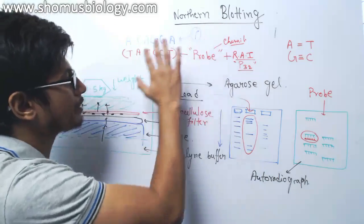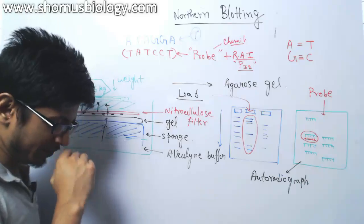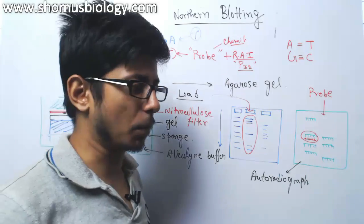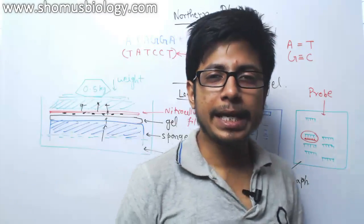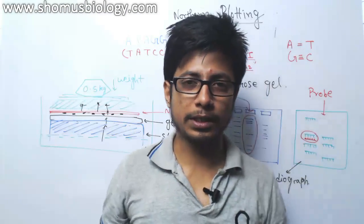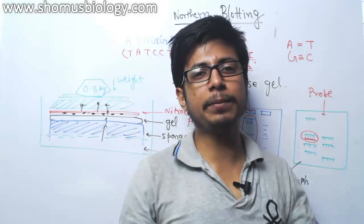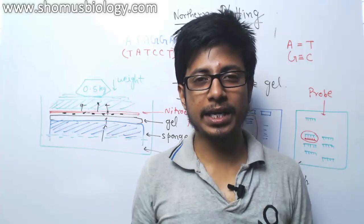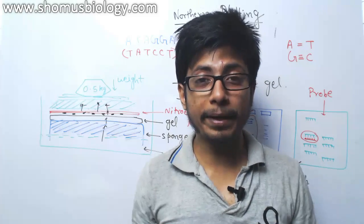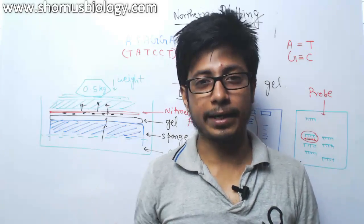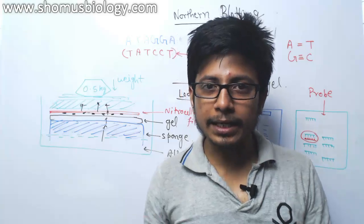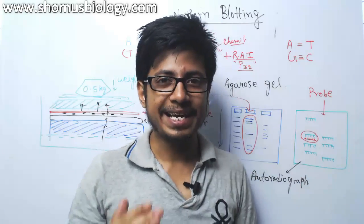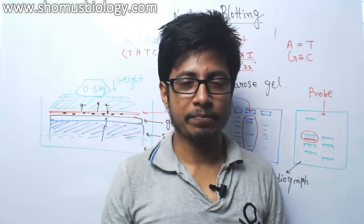What is the process of northern blotting? It is very similar to that of southern blotting. In any blotting process, there are three major stages. The first stage is to prepare the target. The target in the case of northern blotting is RNA.